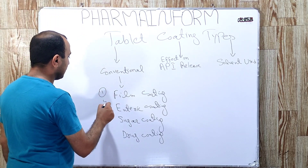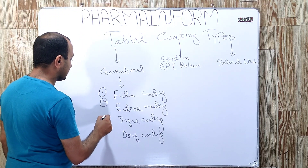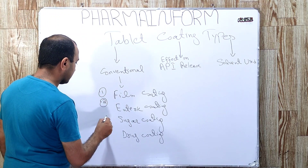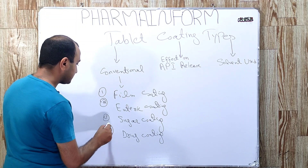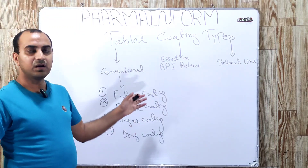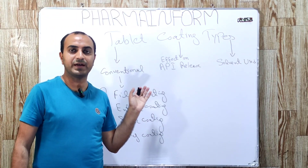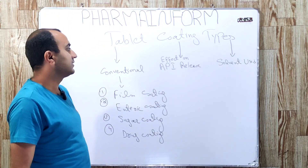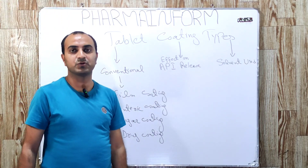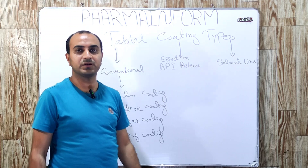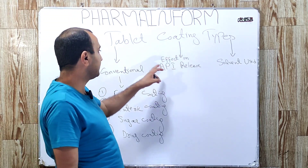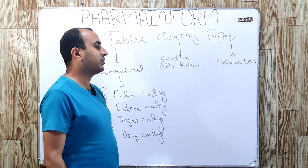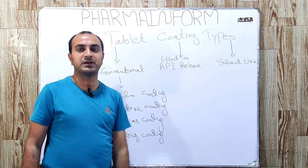These are basically the four conventional types of coating which are known by everyone. The next classification system for types of tablet coating is on the basis of the effect of the polymer on API release.